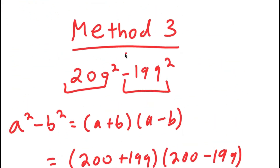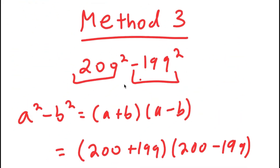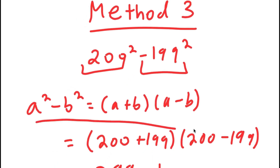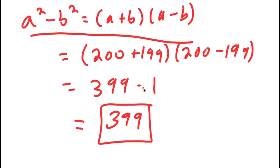This is probably the most efficient of the three methods because it's the fastest. Whenever you see something in the form of a number squared minus another number squared, always use the difference of squares property because it's really helpful for solving your problem fast.